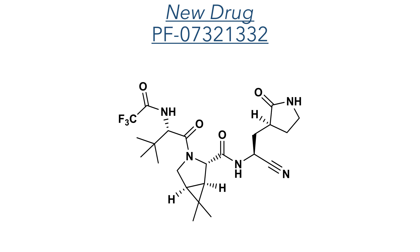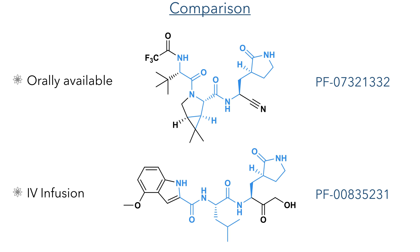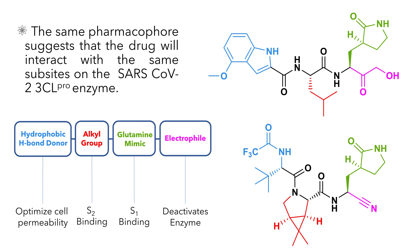With this knowledge of how this class of drugs work, we can look at Pfizer's latest drug, which started phase 1 clinical trials in March of 2021. We can compare these drug structures and pick out similarities. Both of these structures have a conserved peptide backbone with a lactam ring. The key differences are in the structure of the capping group, the alkyl side chain, and the electrophile. While the drug we previously looked at is only suitable for use by IV infusion, this latest drug is orally available and can be taken as a pill. Although these structures are different, the similarities suggest that they share the same pharmacophore and will therefore react in a similar manner within the protease enzyme.